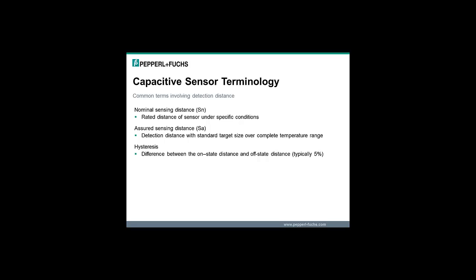Second is the assured sensing distance, which is the distance tested and assured over the complete temperature and voltage range with the standard target size. The assured sensing distance is a more reliable distance to use when designing a sensor for a specific function.